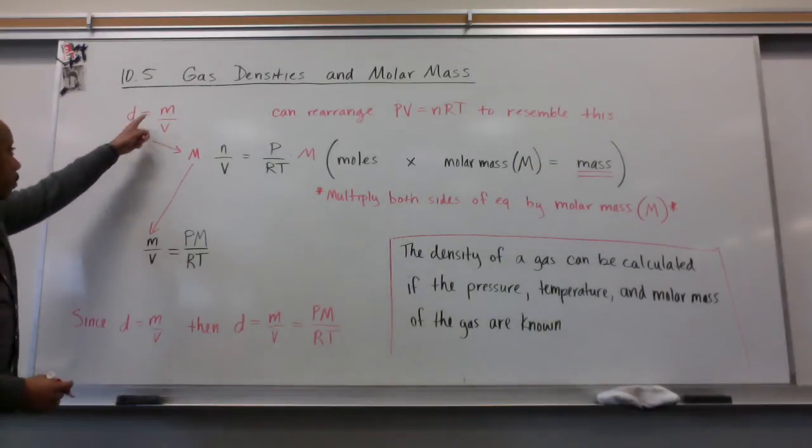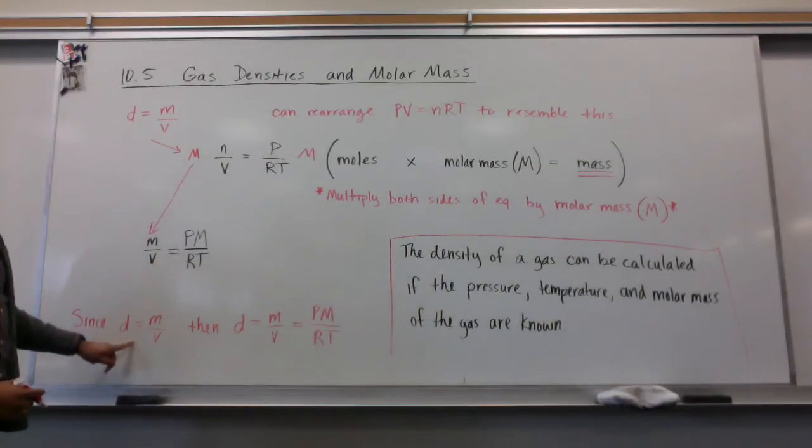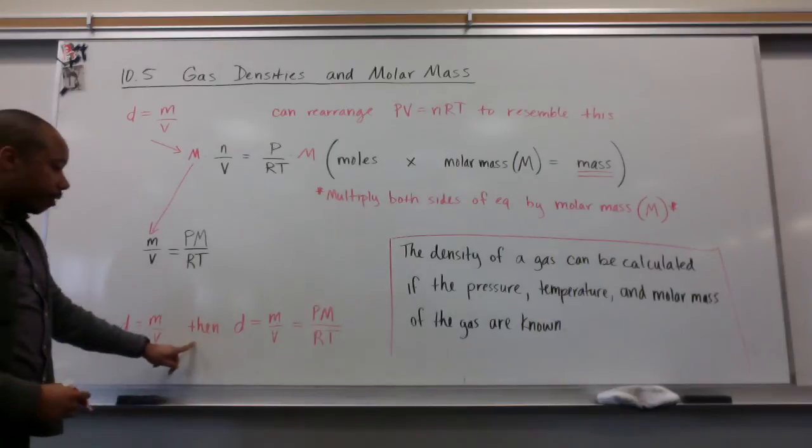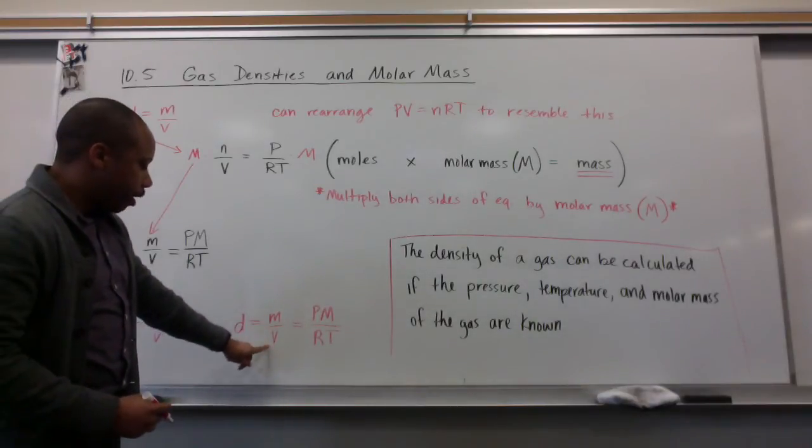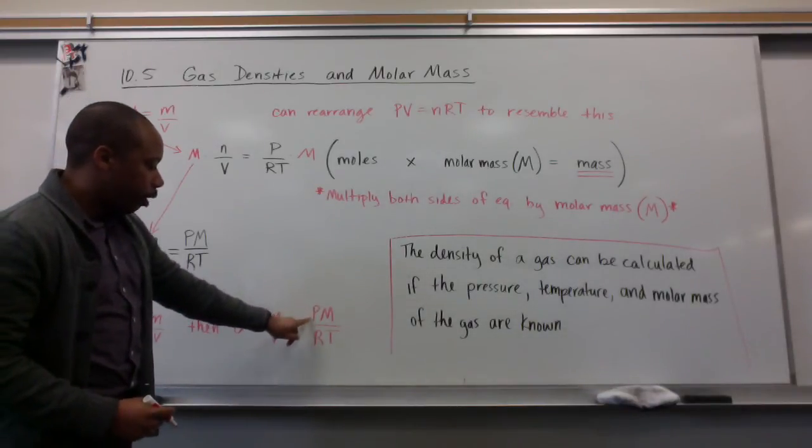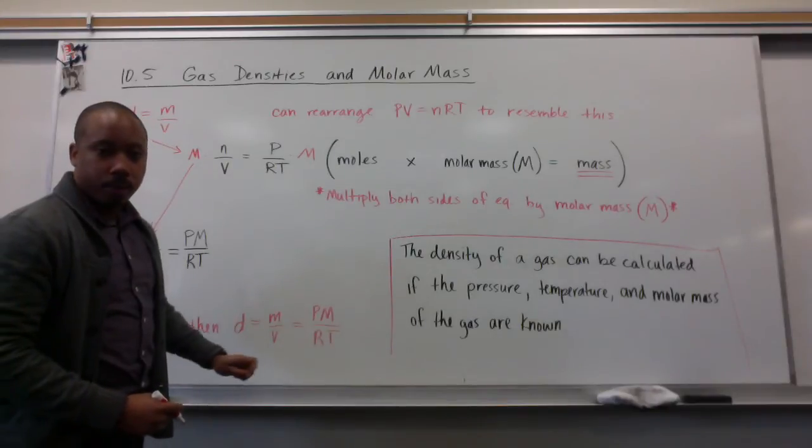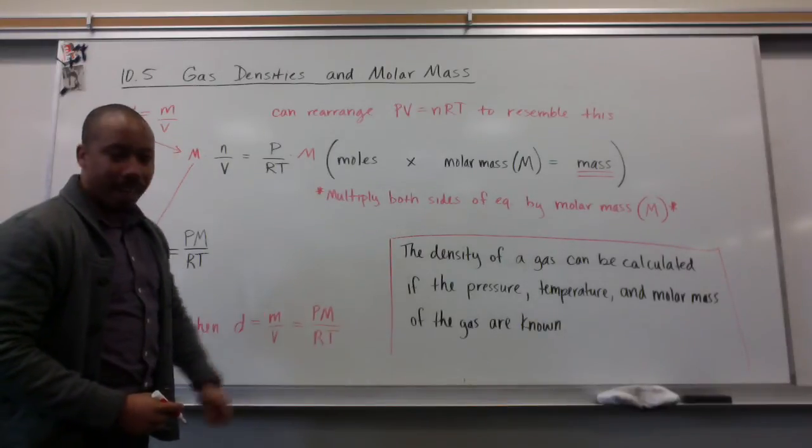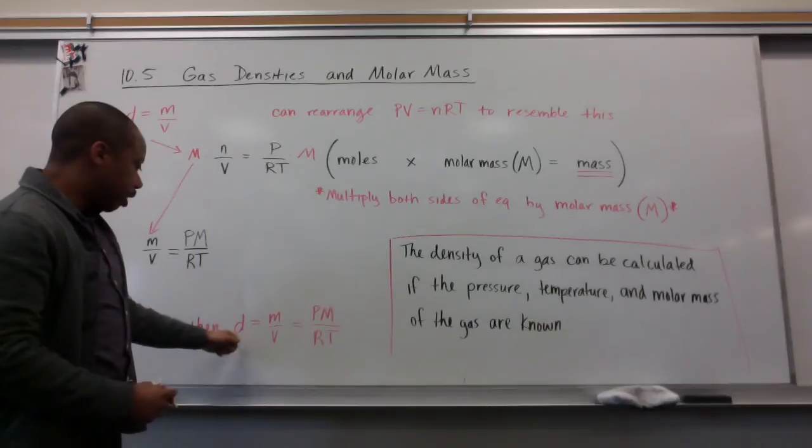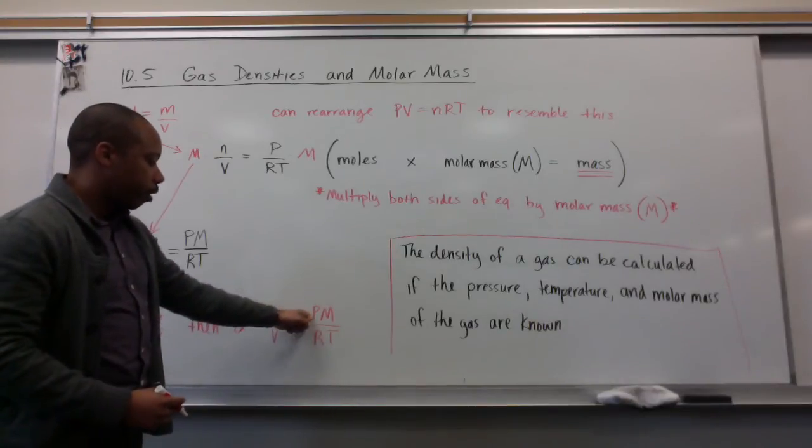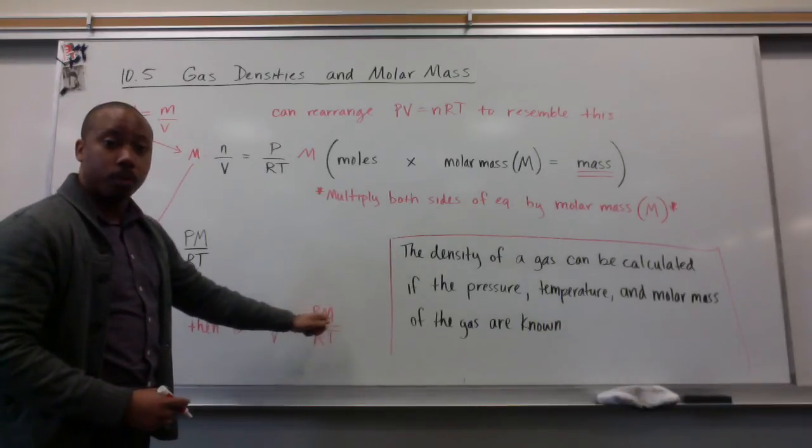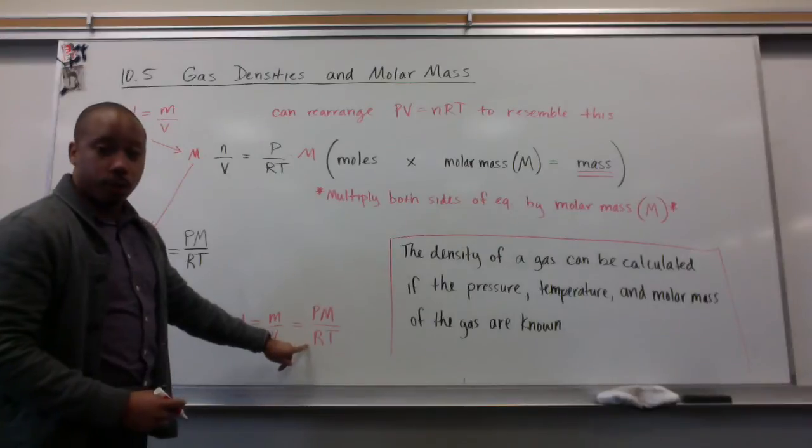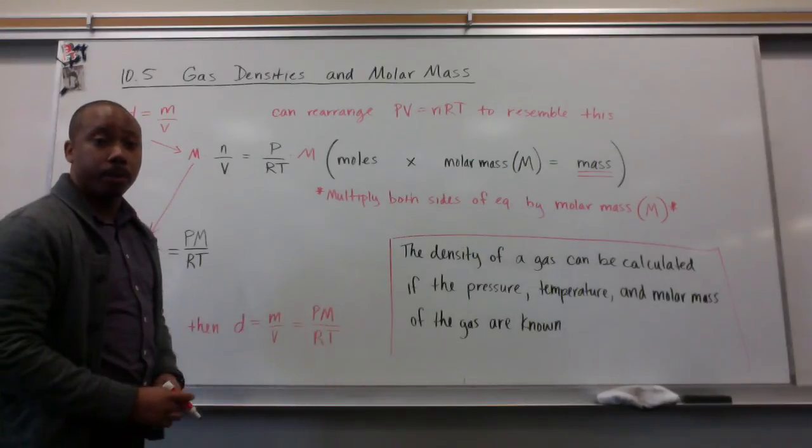We know that density is mass over volume. Since that is true, then that means that M over V, mass over volume, is also equal to P times M, divided by R, divided by T. So density is equal to the pressure multiplied times your molar mass, divided by universal gas constant, divided by your temperature in Kelvin.